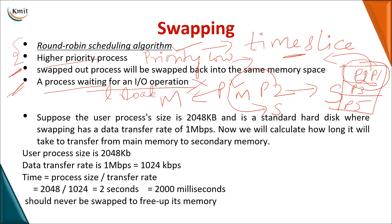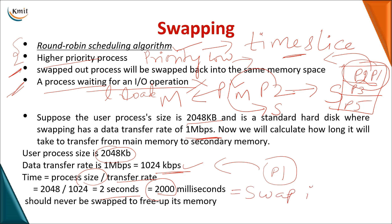Consider a swapping time example. Given a user process size and data transfer rate — both converted to kilobytes — the time required to swap is: process size divided by transfer rate. In this example, that gives 200 milliseconds for a single swap-in or swap-out operation.